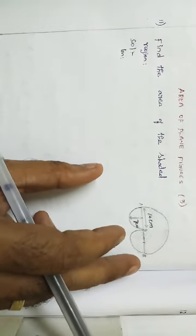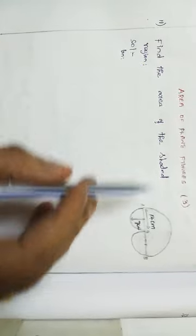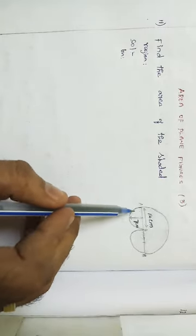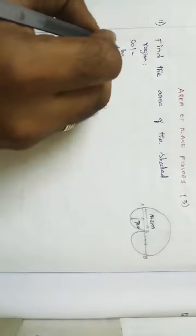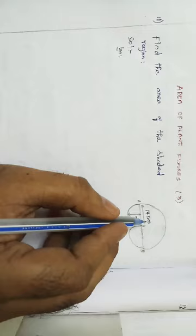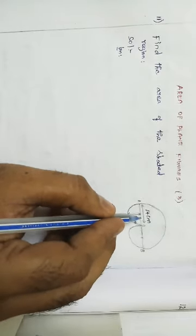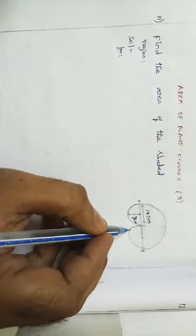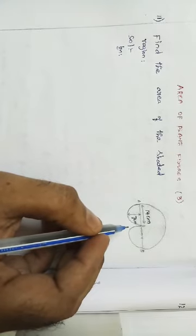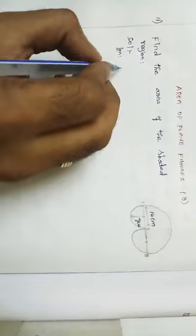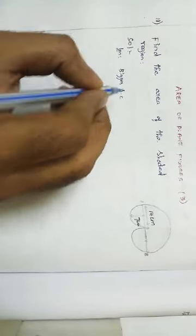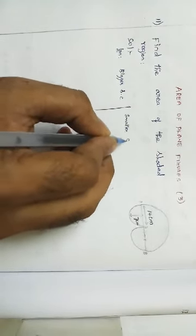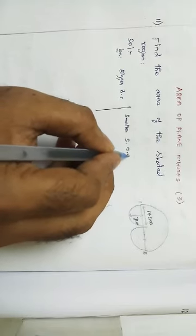So the area of the shaded region is nothing but the area of the bigger semicircle plus two times the area of the smaller semicircle. We are having two kinds of semicircle: one is the bigger semicircle and another one is the smaller semicircle.